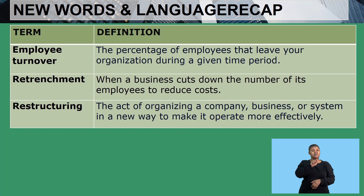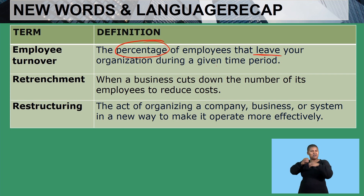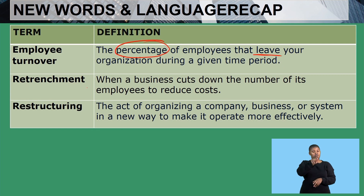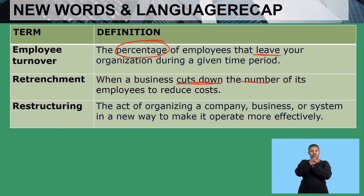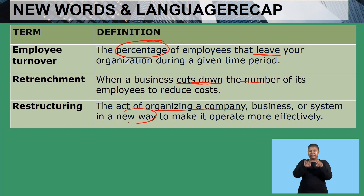We then have 'employee turnover,' which is defined as the percentage of employees that leave the organization during a given time period. We then have 'retrenchment,' which occurs when a business cuts down the number of its employees to reduce costs. Lastly, we have 'restructuring,' which is the act of organizing a company, business, or system in a new way to make it operate more efficiently.